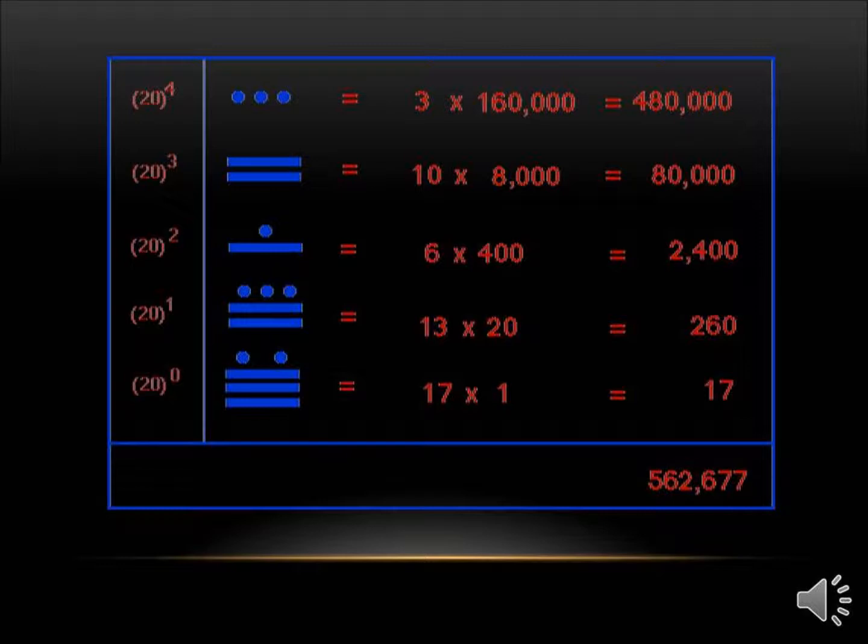And two, they use the base 20, or vigesimal system, which means that instead of the second position having a value 10 times that numeral, in the Mayan system, the number in the second place has a value 20 times the value of that numeral. The number in the third place has a value of 20 times 2, or 400 times the value of that numeral.